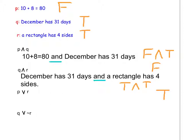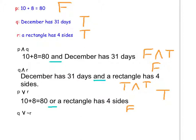Next we will write the compound statement for P OR R. Remember, the V-shaped symbol means OR. Pause the video and write the compound statement on your sheet. The compound statement P OR R is: 10 plus 8 equals 80, OR a rectangle has 4 sides. P is false, R is true. With OR, only one of them has to be true, so the compound statement is true.